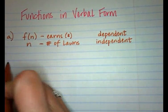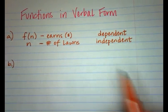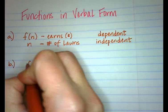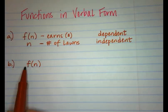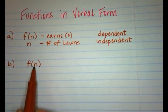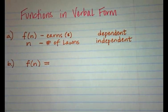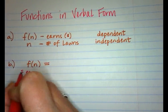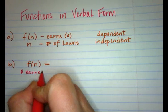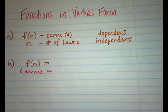For letter B, it says to write a function to represent the total money he earns. We know the money he earns is a function - that's what our f stands for - and it's based on how many lawns he mows. This is talking about the money he earns. I'm going to say money earned is...